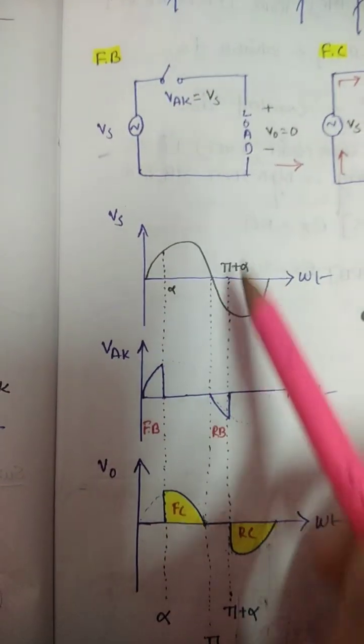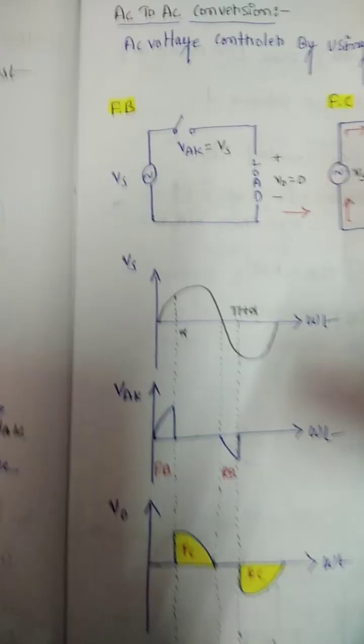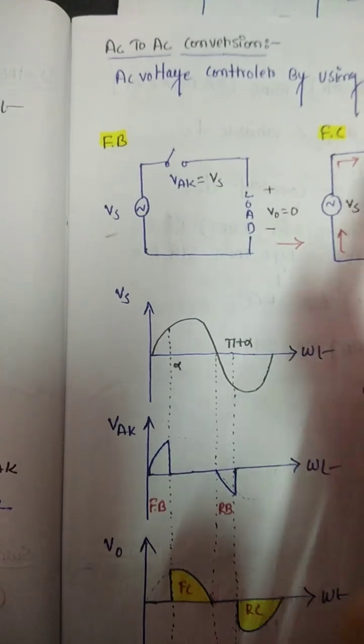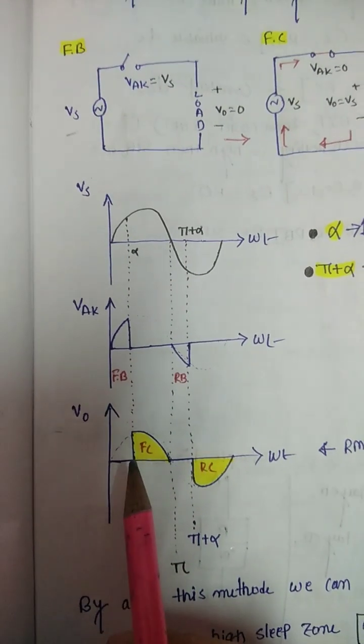When the triac is at forward blocking mode, it blocks the forward voltage. This area is blocked by using the triac, which means that no output voltage is present.